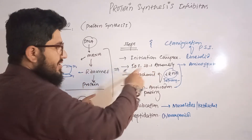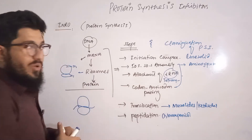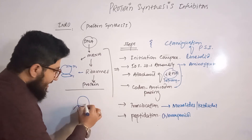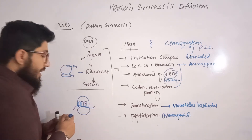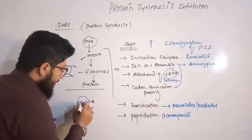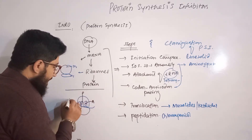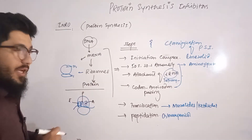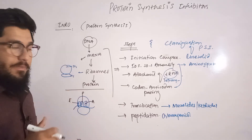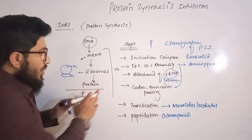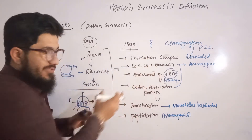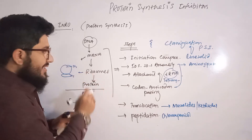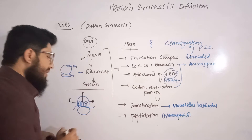In the initiation complex, the assembly of 50S, 30S, and messenger RNA takes place. After that, attachment of the tRNA takes place. The large 50S subunit contains three important regions named A, P, and E. After the initial complex is formed, the tRNA is supposed to come and bind to the A region.